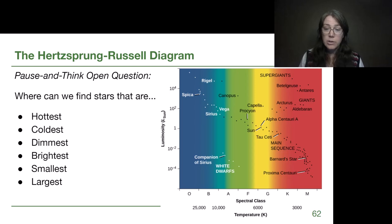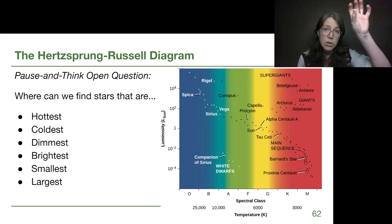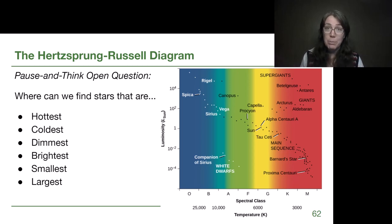So the hottest stars are found on the left side of the plot. If you wrote something other than left, if you wrote upper left or you specified, we actually really just want it to be the left side because we can have hot stars that are also bright and we can have hot stars that are dim. Coldest stars. The coldest stars are on the far right of the image. And again, if you specified top right or bottom right, we want to fix that. It's just the right side because we can have cold stars that are on the main sequence, but we can also have cold stars that are giants and supergiants. It's only the far right that is indicating temperature.